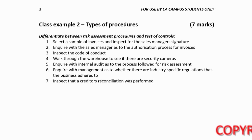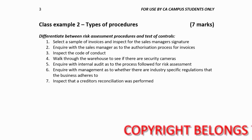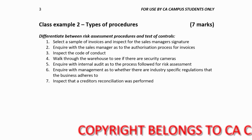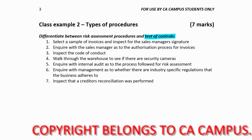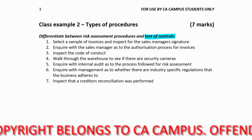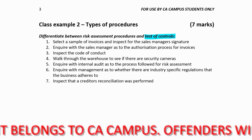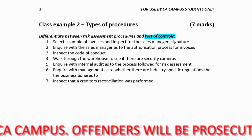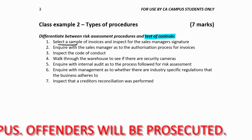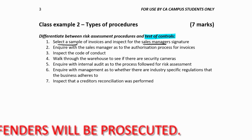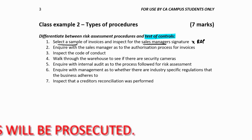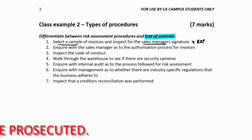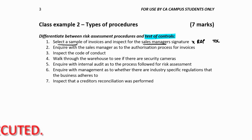The question is to differentiate between risk assessment procedures and tests of controls. It's fine to just say yes, it's a risk assessment procedure, or no it isn't — and if it isn't, then by default it would be a test of control. For example, selecting a sample of invoices and inspecting for the sales manager's signature: even though a risk assessment procedure involves inspecting documents, taking a sample and looking for a specific signature involves too much work — this is a test of control.